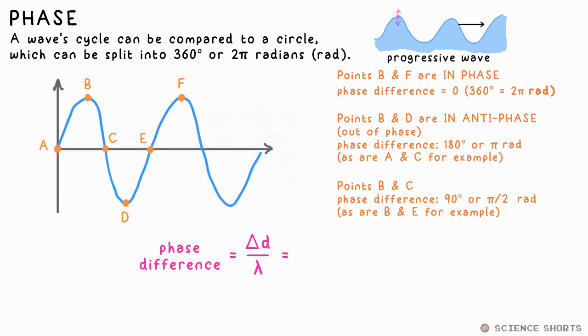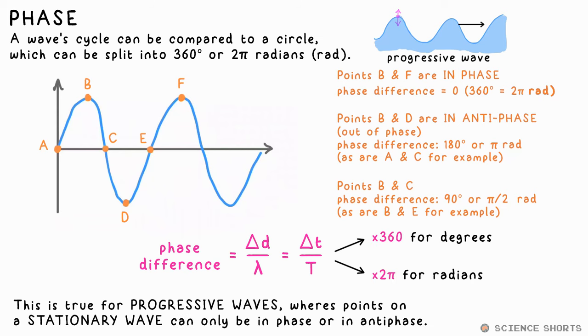Any phase difference can be calculated as a fraction times the total inner cycle, so we can do the distance between two points divided by the wavelength, or time difference between two points divided by the time period, depending on what graph we're given. Then we just multiply by 360, or 2 pi, depending on whether we want the phase difference in degrees or radians.